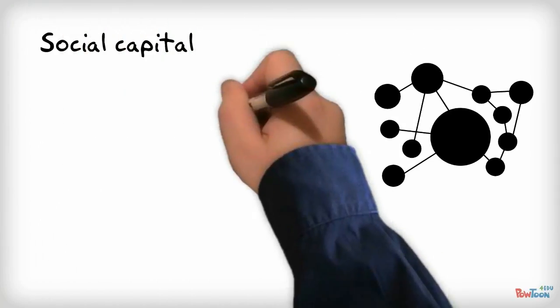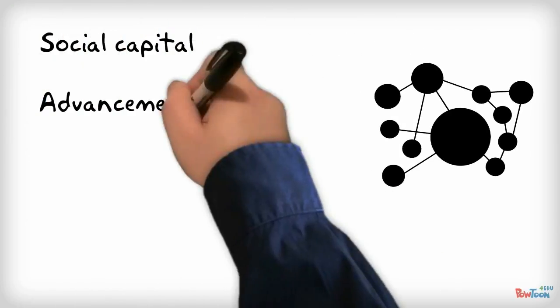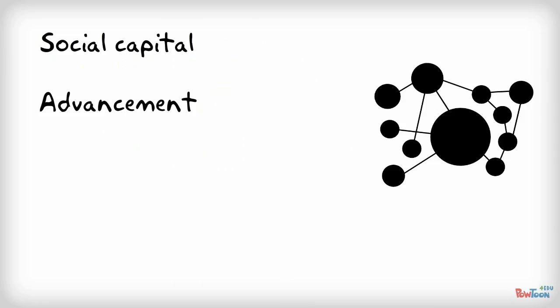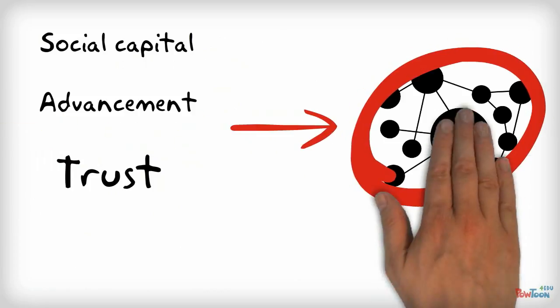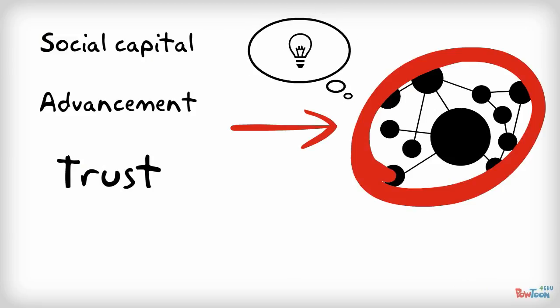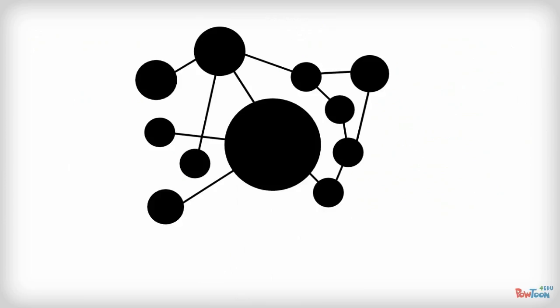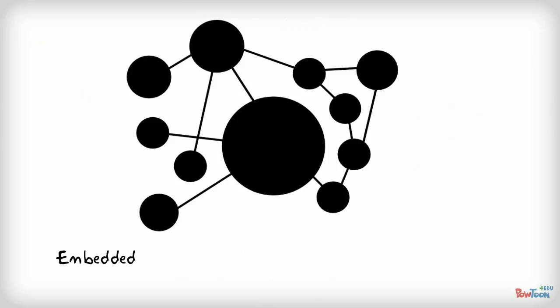Social capital, opportunities for advancement, and the general proliferation of trust. However, as social networks become more trusting and cohesive, they also become more closed and less susceptible to innovation. So embeddedness is essentially a measurement of how enmeshed an entity is within a social network.